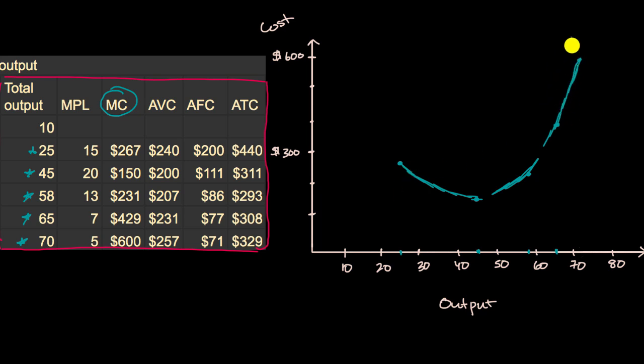So that's our marginal cost curve, labeled accordingly. Now let's see how that relates to the curves for average variable cost and average total cost.